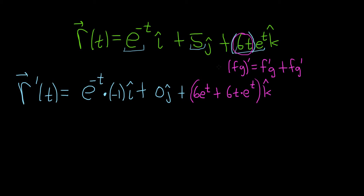Let's just check that. The derivative of the first is 6 times the second, plus the first, which is 6t, times the derivative of e to the t, which is e to the t. The last thing to do, maybe, is just clean this up just a little bit.